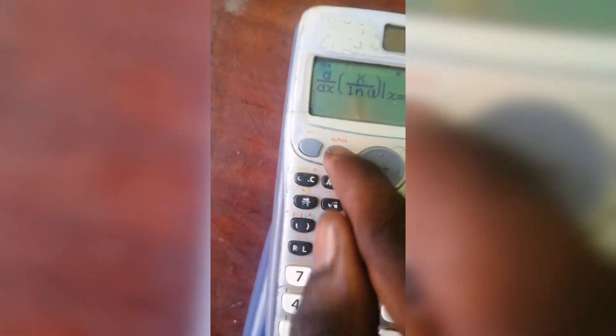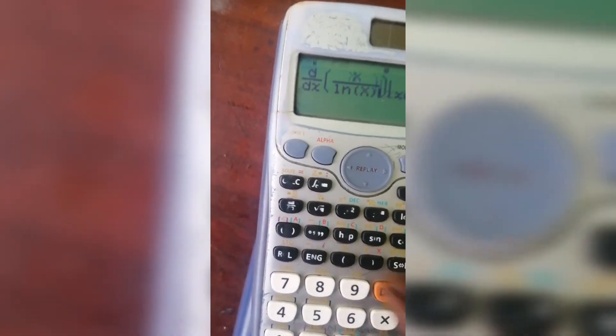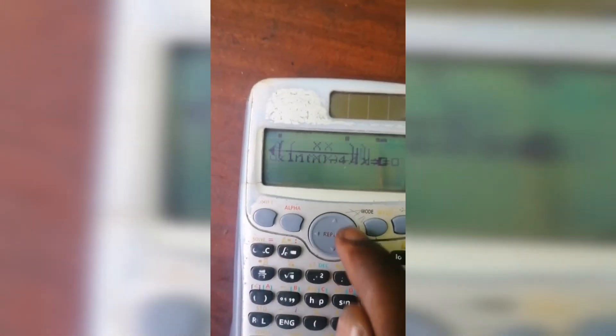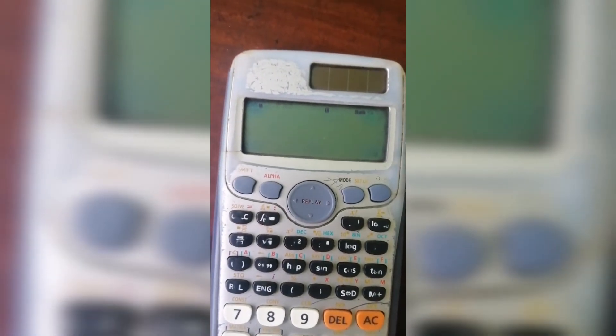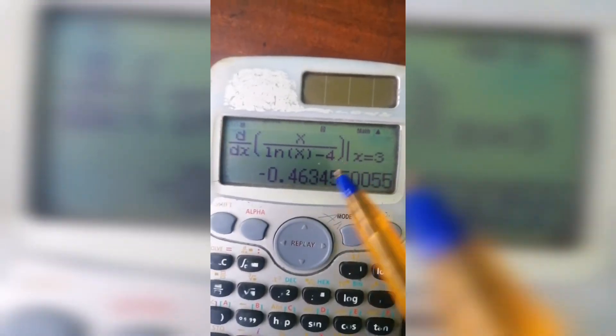Alpha plus x, so it is ln alpha plus x, close it, minus our c is 4, so minus 4. X we are taking to be 3, so you put in 3 and press equal to. You see the answer we had here, negative 0.46345, is the same answer we had here. That means this is the answer to this differential equation.